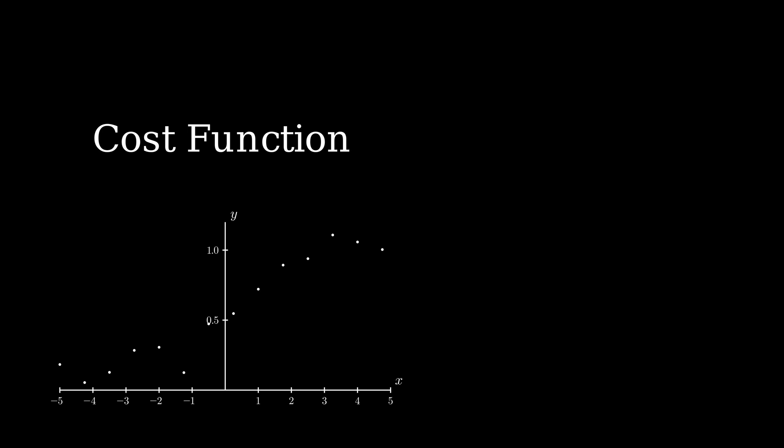This is where the concept of cost function comes in. It's just a fancy name to denote the error made by the selected line at the x locations where we already know. Hence, for a line that fits well, cost function will return a small number and for a line that doesn't, it returns a larger number. Now, let's define cost function mathematically.